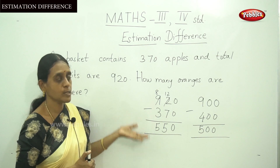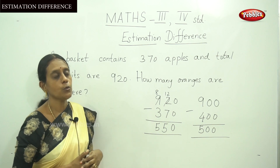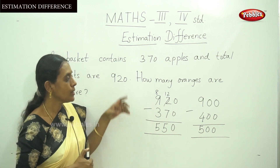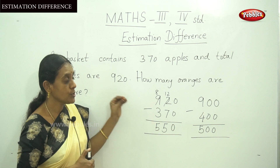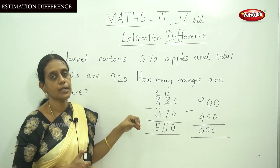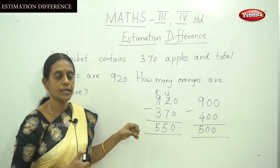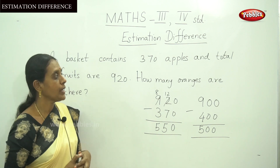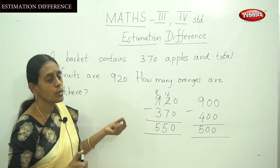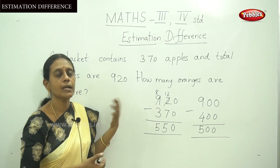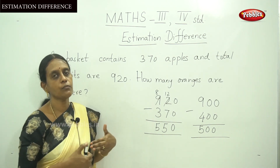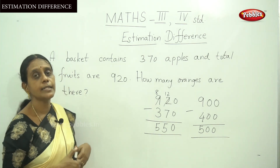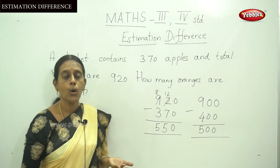In your textbook there are many examples. Practice them and make sure you know rounding off — nearest 10, nearest 100, and nearest 1000. Now let me explain one more small topic: how to check a subtraction sum, whether it is correct or not.